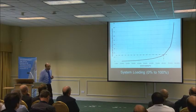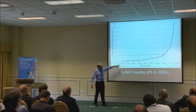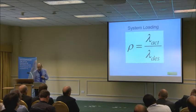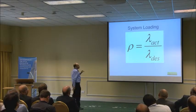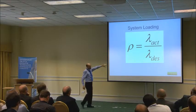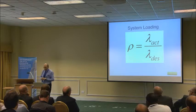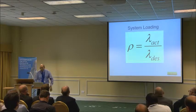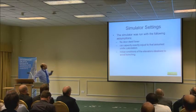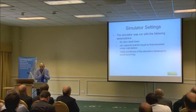This is the classical Barney-Dos Santos curve, where system loading goes from 0 to 100%, examined with simulation. I increase system loading above 100% because that is very insightful. Lambda is the symbol for passengers arriving per second — what the system has been designed for, which is 100% loading. The simulator used here had no dwell timer, car capacity was exactly what was assumed in calculation, and we had initial conditions to avoid bunching.